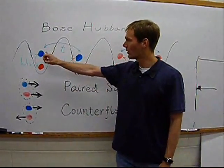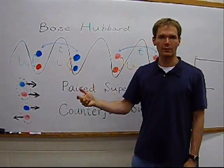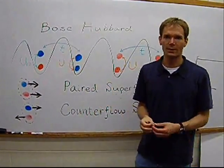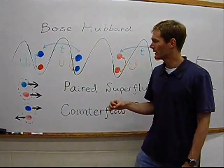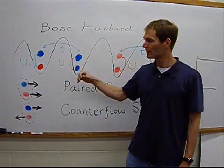One of them is the hopping amplitude of the species between neighboring sites T, which we choose to be the same for each of the two species, which could be hyperfine states of ultra-cold atoms. Then there's a contact interaction between the same species U, as well as an inter-species interaction U12 between the two.